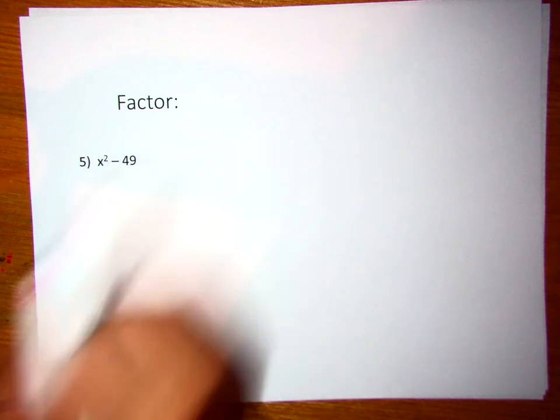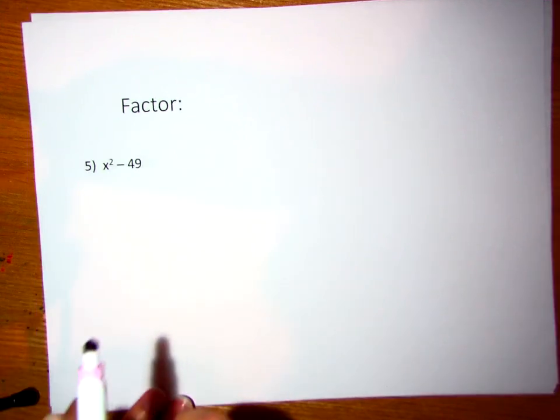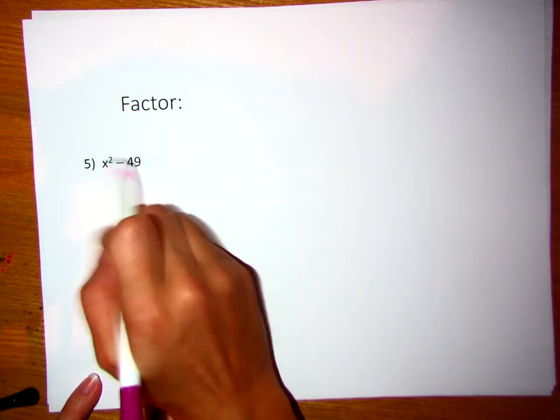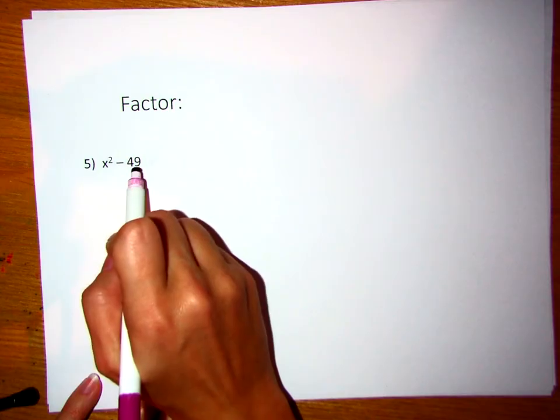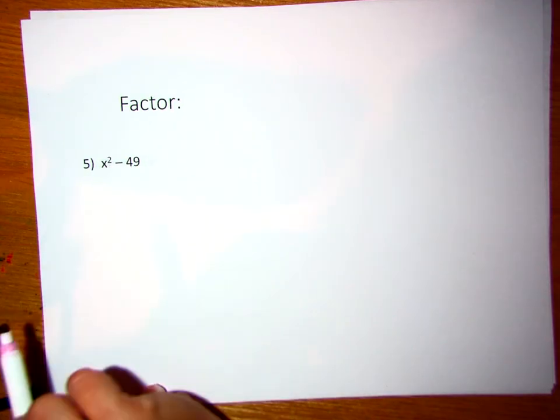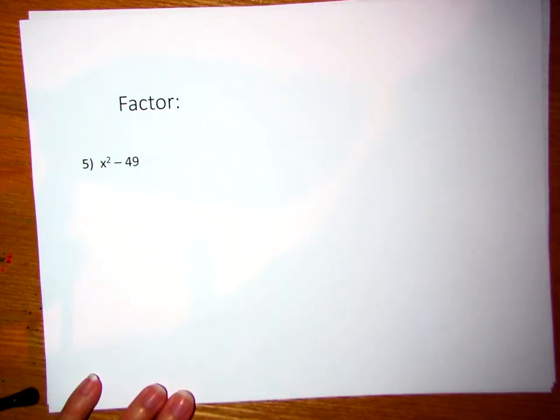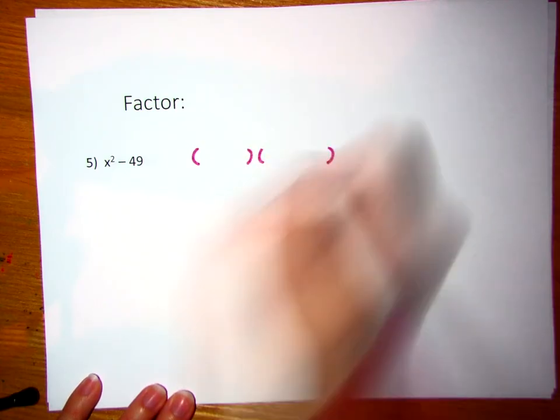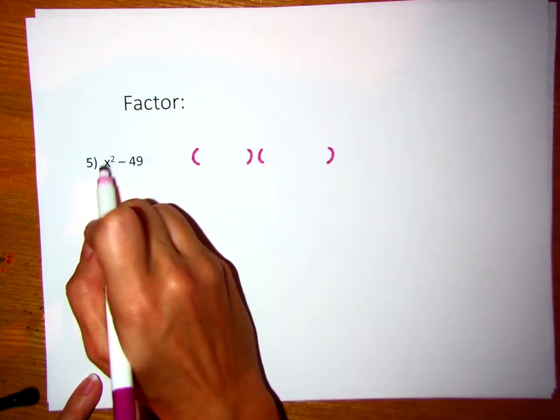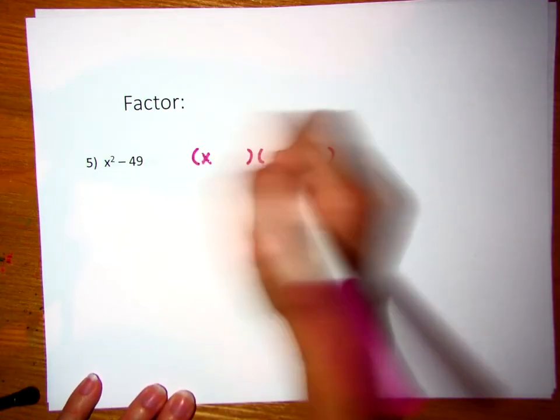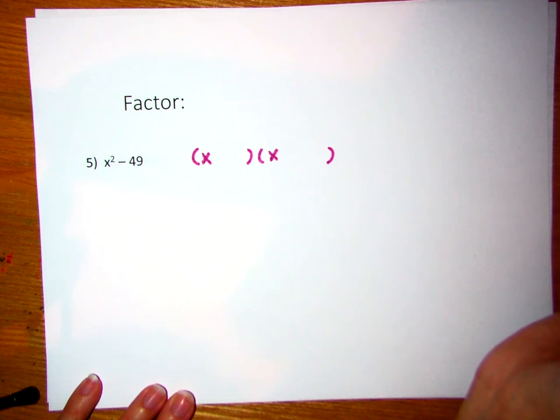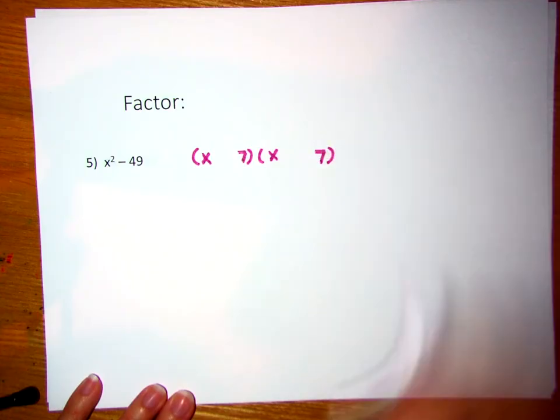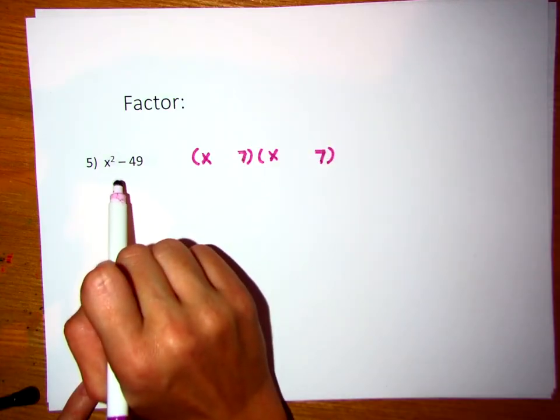Then we have this thing called the difference of two squares. The idea is it's got to be a difference, which means subtraction. Both of these have to be perfect squares. In other words, something times itself gives me that term. When you factor this, you're going to open up two parentheses. What is that thing times itself that gives me x squared? x times x. What number times itself gives me 49? 7 times 7.